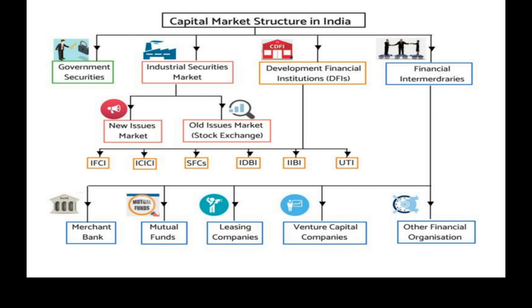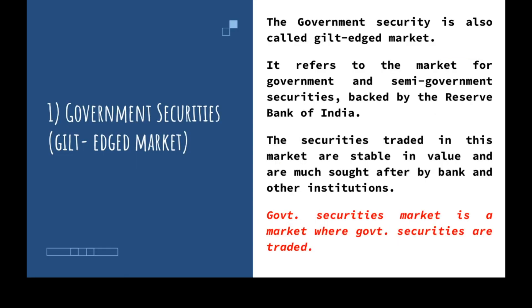Now let us discuss in detail the various institutions operating in the Indian capital market. The first one is the government securities or gilt-edged market. It refers to the market for government and semi-government securities backed by the Reserve Bank of India. The securities traded in this market are stable in value and much sought after by banks and other institutions.